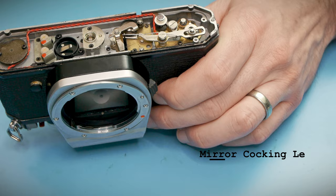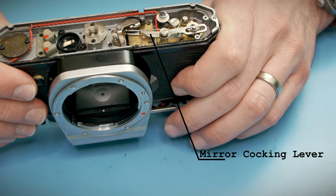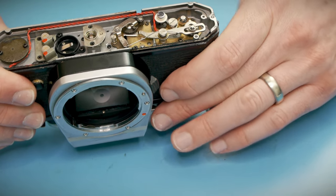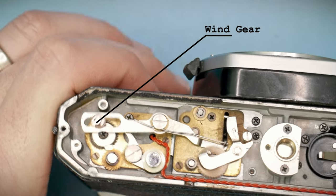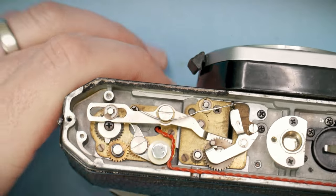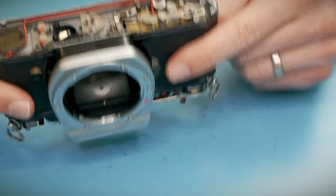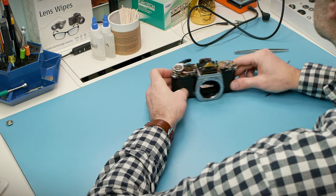The cocking lever resets the mirror by pushing the tensioning lever back up into the charge position. And then you can see the wind gear moving in the slot on the left-hand side as I advance the frame. And that's pretty much the whole mirror charging mechanism from winding to release.